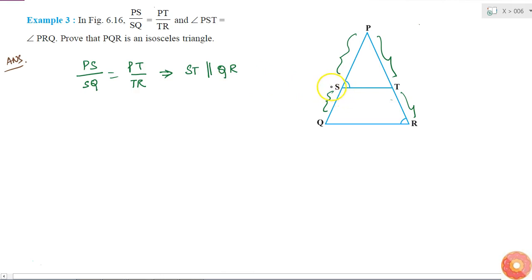Then I can see here that ST is parallel to QR, and I can consider PQ as a line intercepting these two parallel lines.